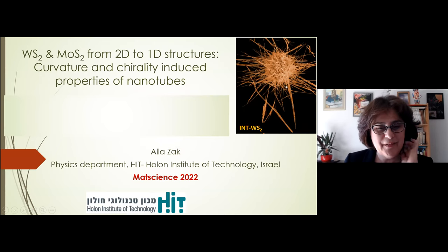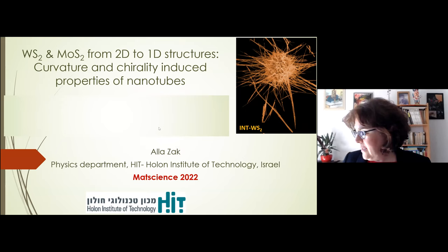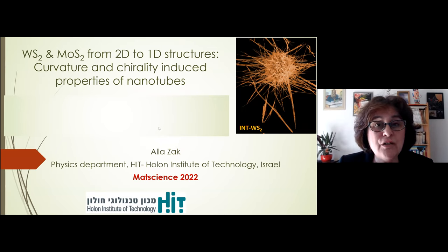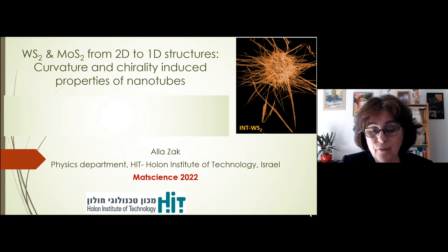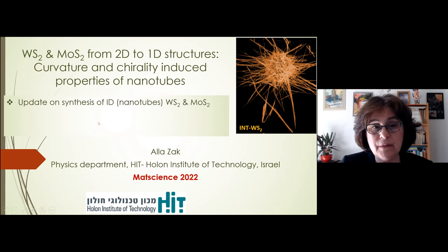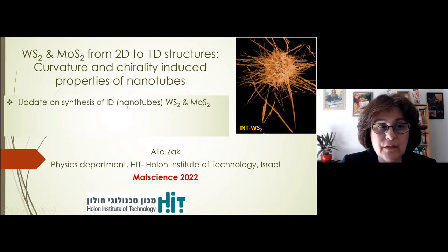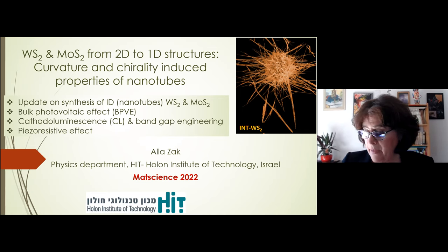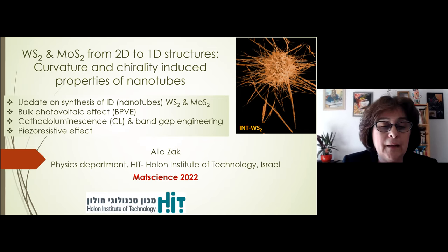Thank you to the organizers. I will talk about tungsten and molybdenum disulfide transition metal dichalcogenide synthesis, and about the most pronounced properties of these materials when their structure or morphology changes from 2D to one-dimensional. I will cover photovoltaic effects, cathodoluminescence, and resistive effects - three interesting phenomena found in these materials.